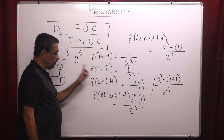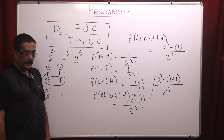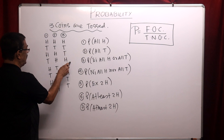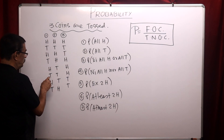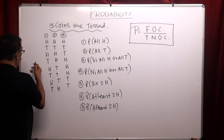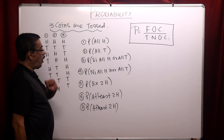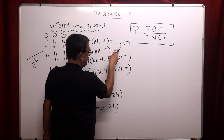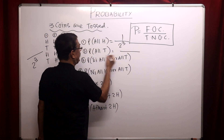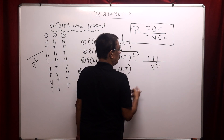Now when three coins are tossed: the outcomes are all head; all tail; first and second head third tail; second and third head first tail; third and first head second tail; first and second tail third head; second and third tail first head; and third and first tail second head. There are eight outcomes because two to the power three equals eight. For all head: only one case, so 1 over two to the power three. For all tail: only one case. For either all head or all tail: two cases, so 2 over two to the power three.